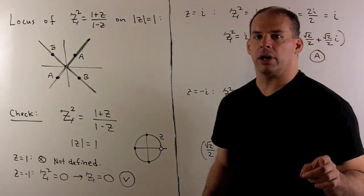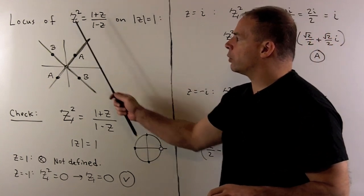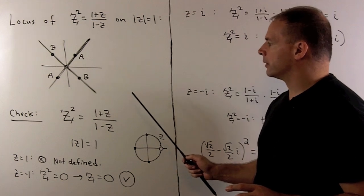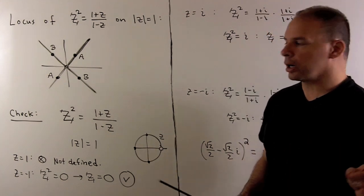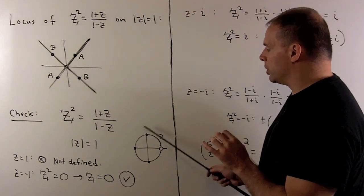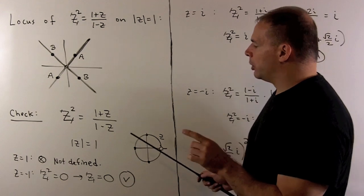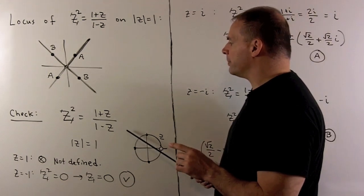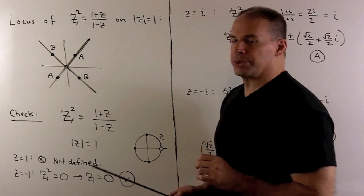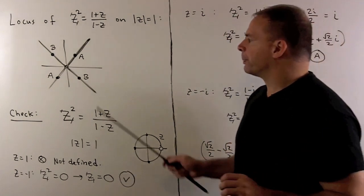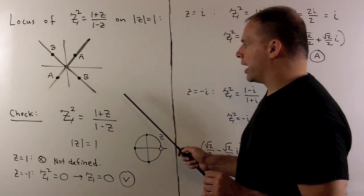Putting everything together, the locus of our original equation is given by these two lines. Of course, we check our work. We'll take some points from the unit circle, put them into the right-hand side of the equation, then take the square roots. The check is those square roots wind up on one of these two lines.